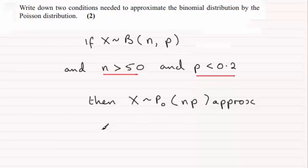There's another way that I've seen that the approximation is written: we can say that X is approximately distributed as a Poisson distribution with a mean np. So that's an alternative way of writing that statement.